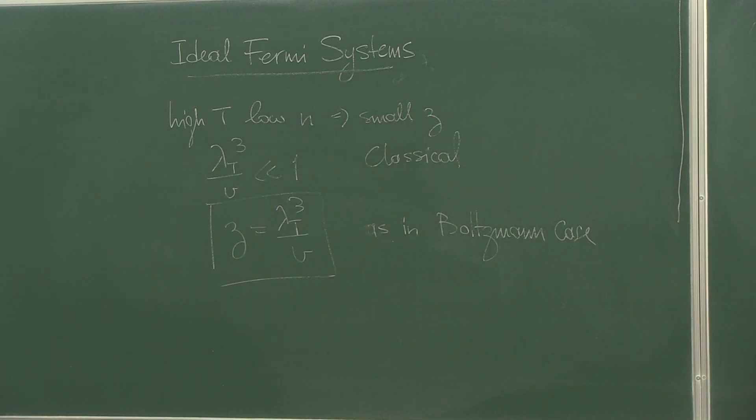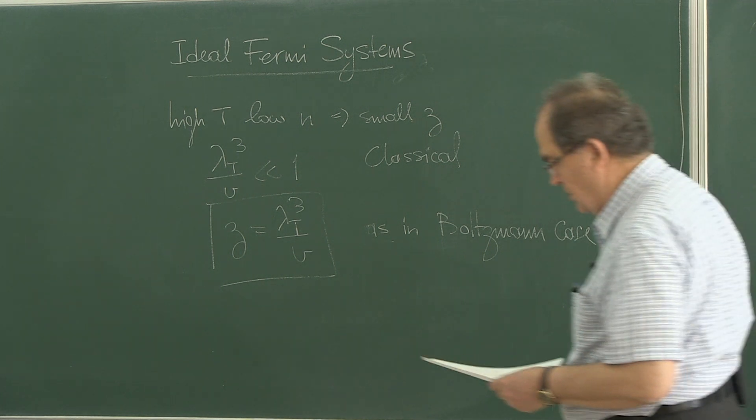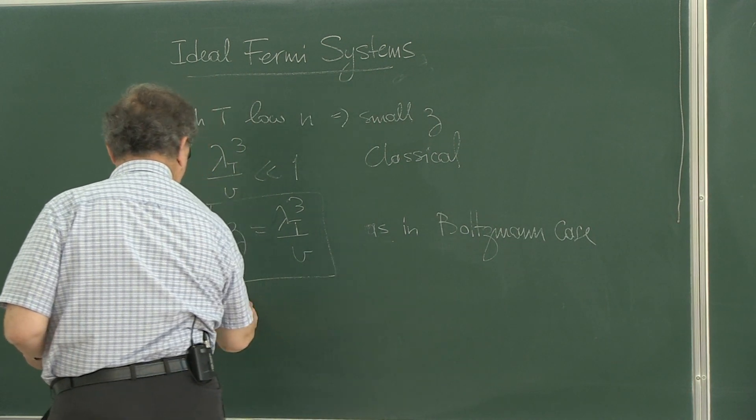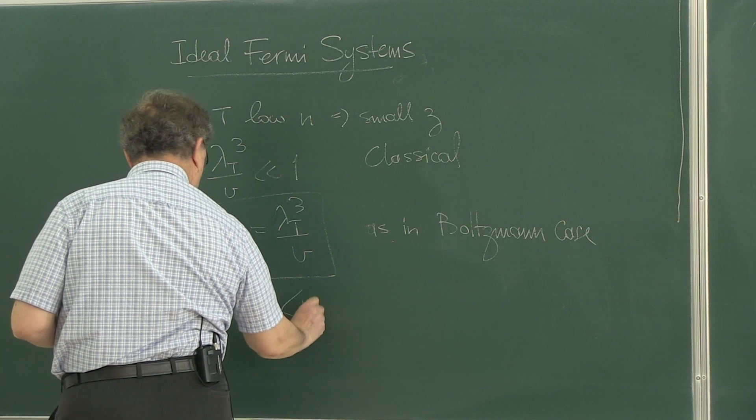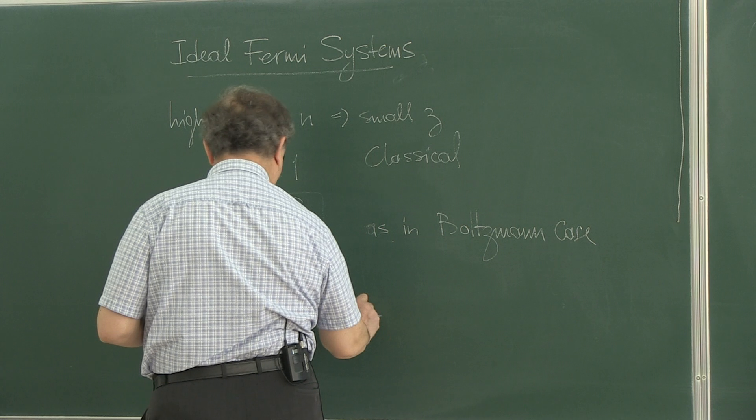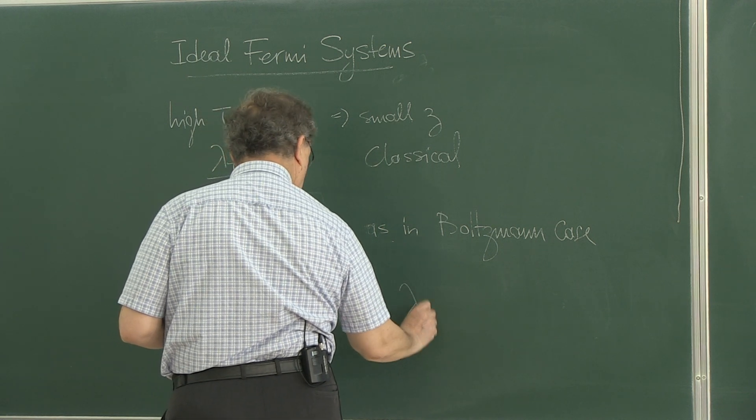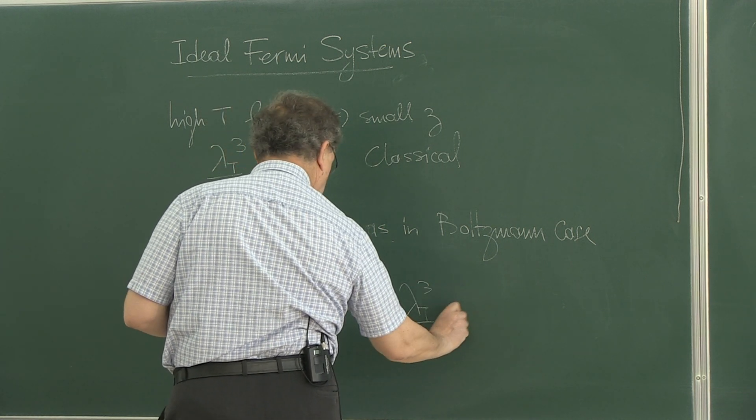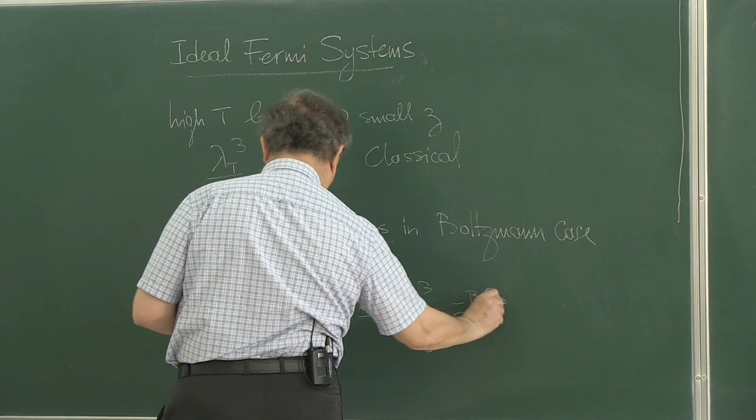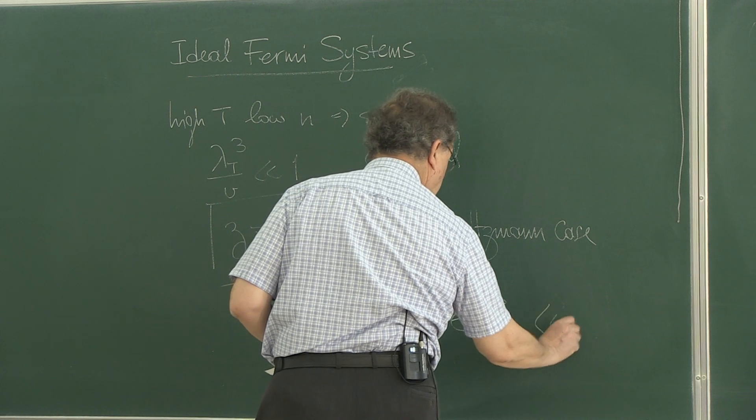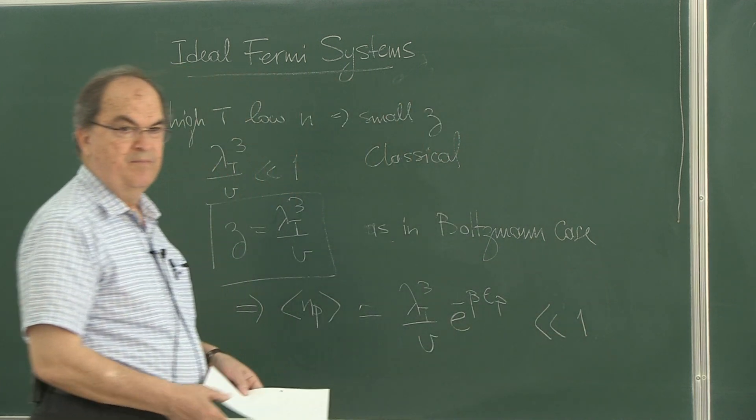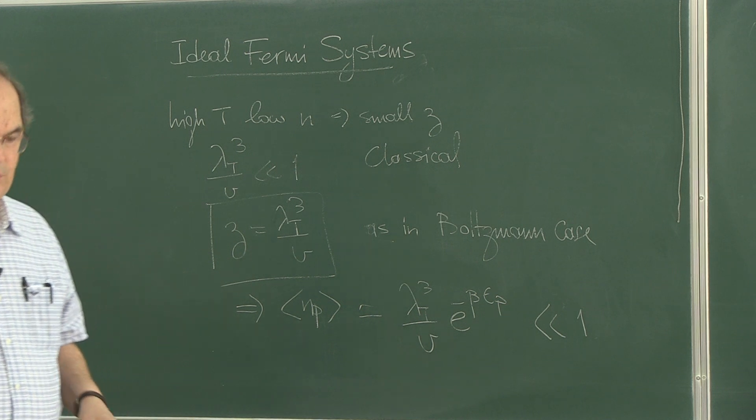Derivation is in your hands. n comes out to be of the order of lambda t cube v e to the minus beta epsilon, which is very much smaller than 1. And that was also classical Boltzmann limit.